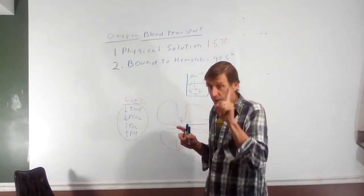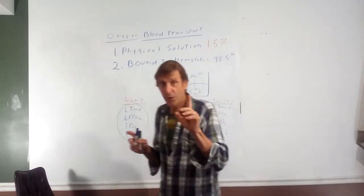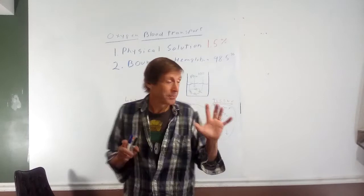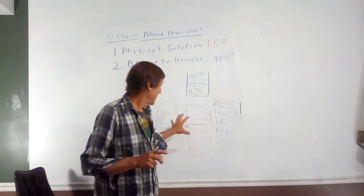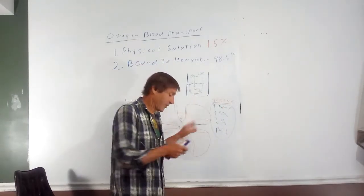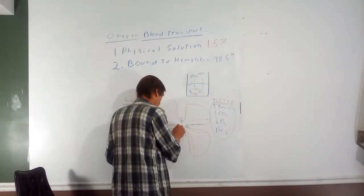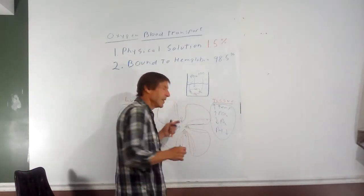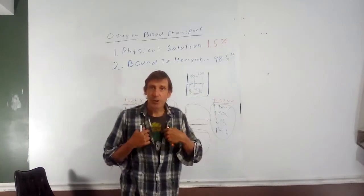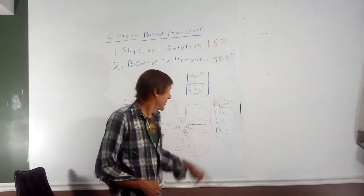This is referred to as cooperative binding. When you have one oxygen bind to hemoglobin, it makes it much easier for the second, the third, and so on to bind. Very rapidly in the lungs, the hemoglobin loads up with all four oxygens — that's all it can carry. Each hemoglobin is limited to carrying four oxygens.